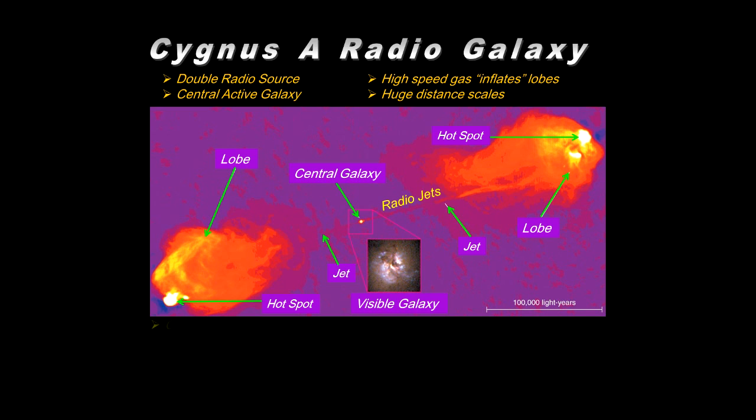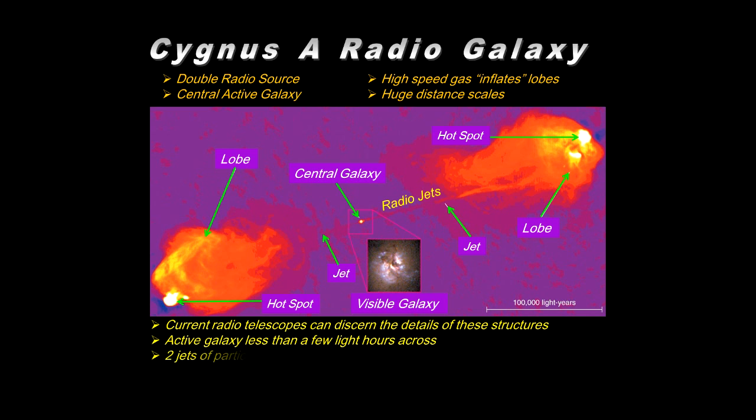The central region itself is a few light hours across. Now, considering this is a hundred thousand light years, this being a few light hours, it's much smaller than this dot indicates. It's just so bright it saturates the detectors, but it would be much smaller than the eye could see at this scale. So from that small source, you're producing prodigious quantities of radio emission that's a manifestation of high-speed jets of particles being lobbed into the interstellar medium and producing these huge emissions of light as those particles ram into the intergalactic medium gas.